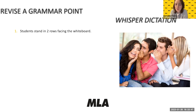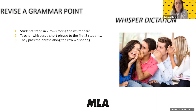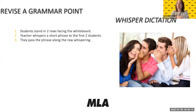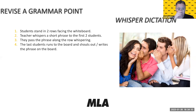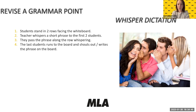If you're playing with more than two rows, you can write the phrase on a piece of paper and show it to those students. Then say 'go' and they have to turn around and whisper the phrase to the second student, who whispers it to the third, and so on. In the process of whispering, the phrase changes. The last student runs to the front toward the whiteboard and either shouts out the sentence or writes it on the board.